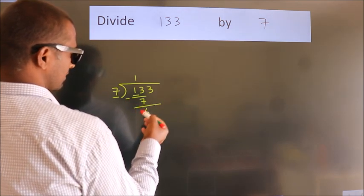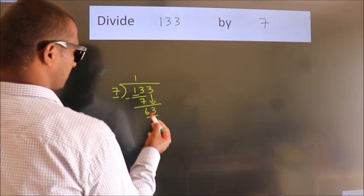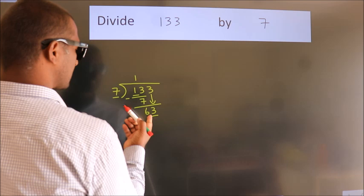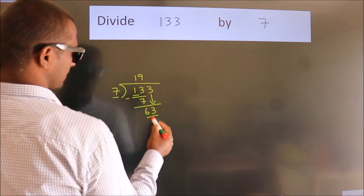After this, bring down the beside number. So 3 down. So 63. When do we get 63? In the 7 table, 7 nines 63.